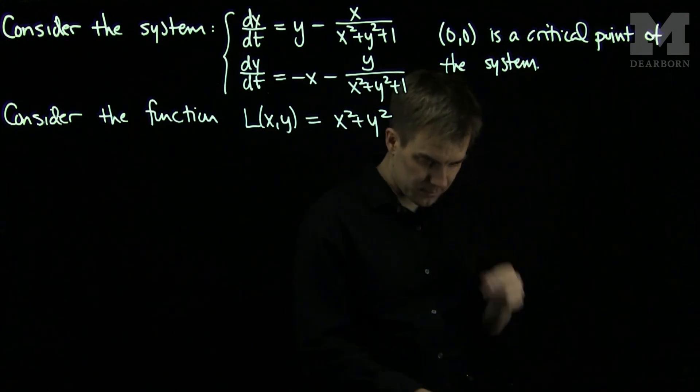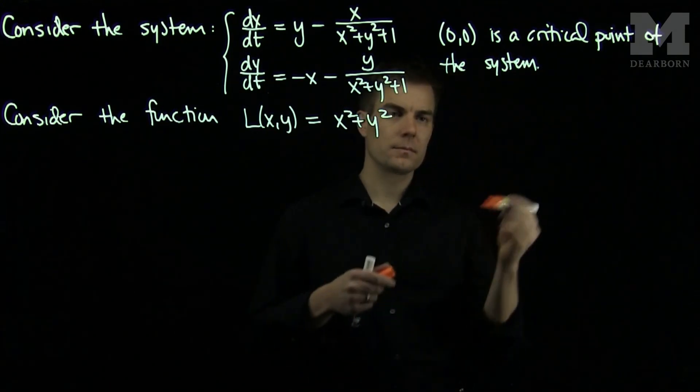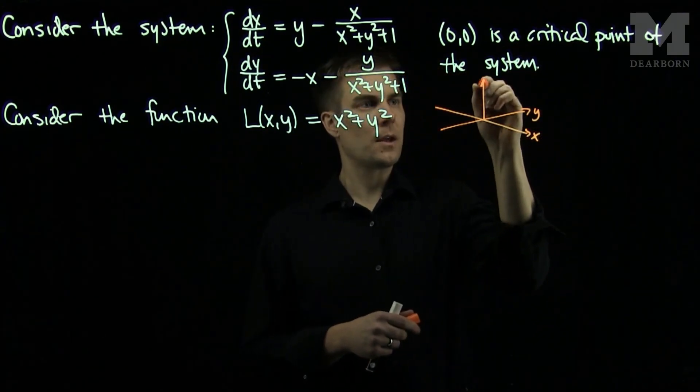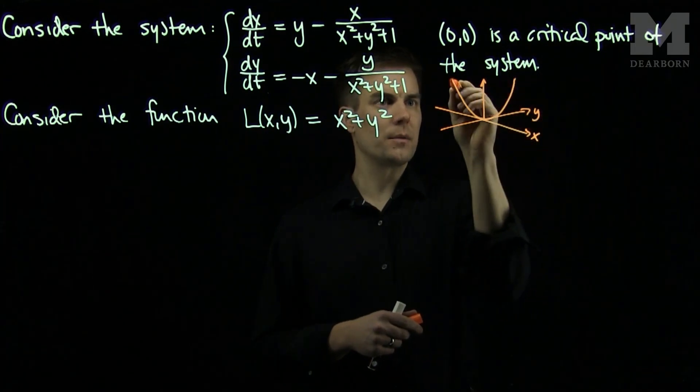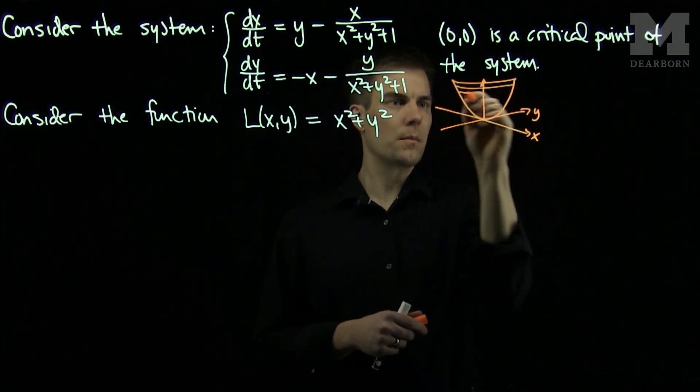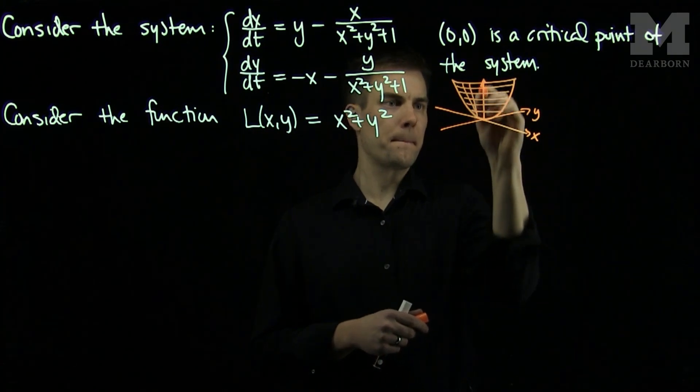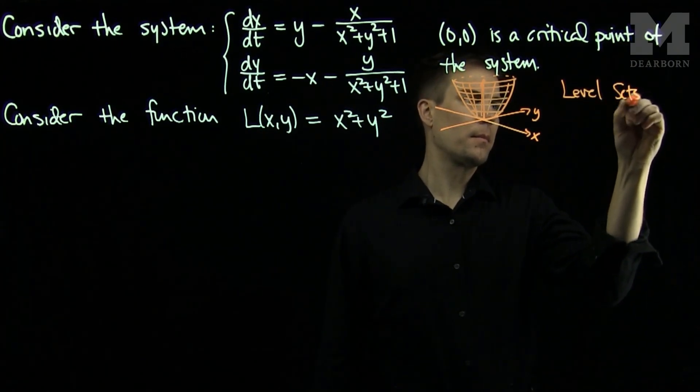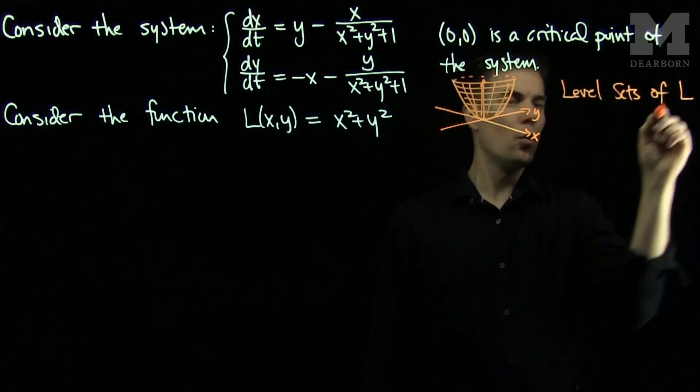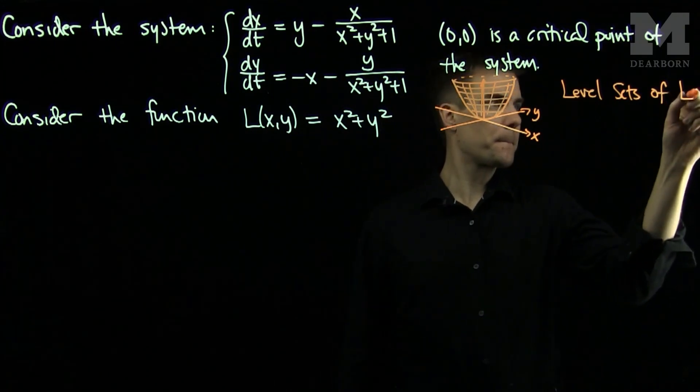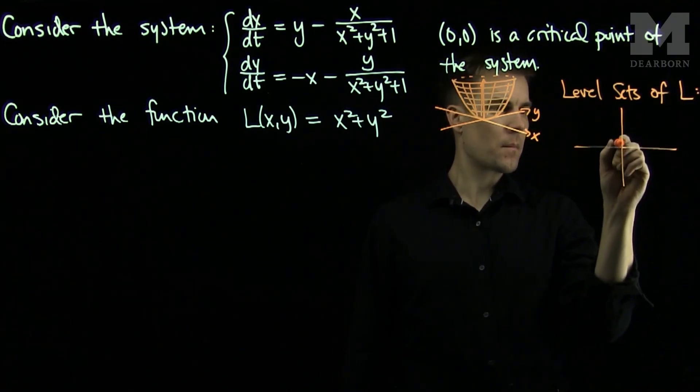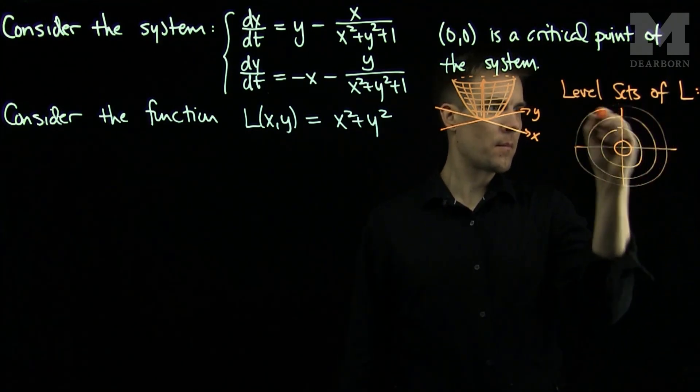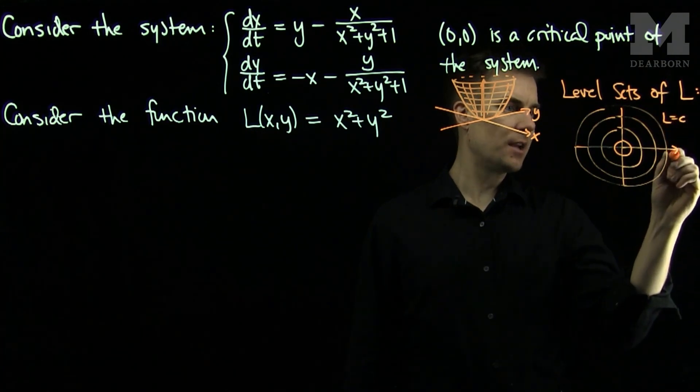We can plot this function on the xy plane. And it will be a paraboloid. And the level sets of L will be circles that are centered at the origin. So this is L = C, the level sets.